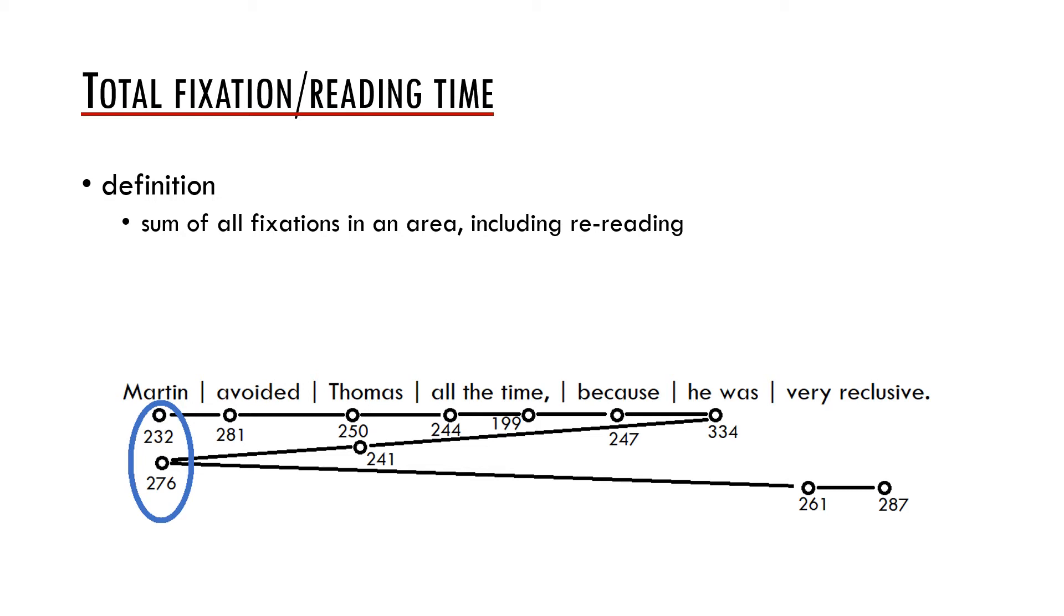Another measure is the total fixation time. This is simply the sum of all fixations in an area, including re-reading. In the example below, the total fixation time for the region Martin is 508 milliseconds, which is a sum of 232 and 276 milliseconds.